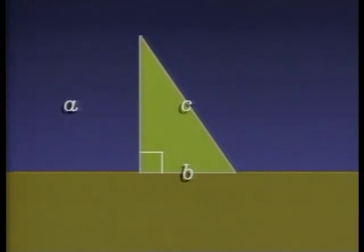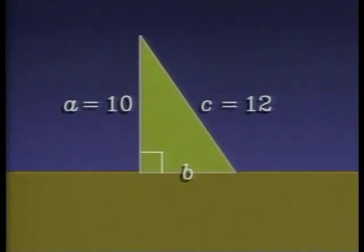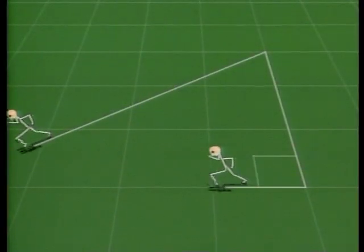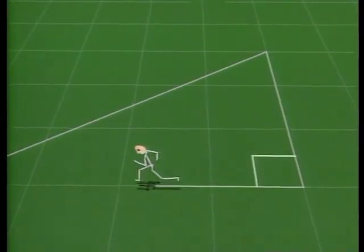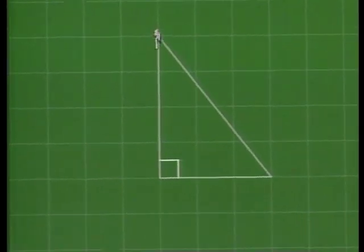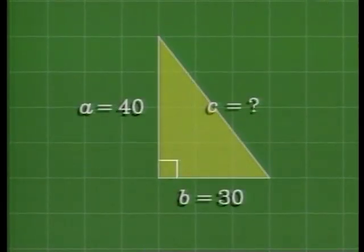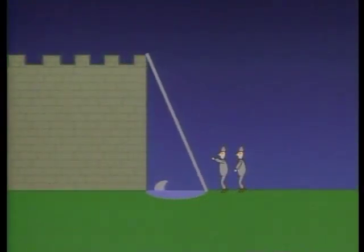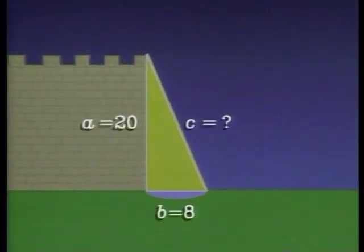Where should the guywires be fastened on the ground so the tower will be vertical when it is lifted into place? The altitude is 10 yards. The hypotenuse is 12 yards. How long is the other side? We can answer all these questions by looking at one mathematical problem: find the length of one side of a right triangle when the lengths of the other two sides are known.